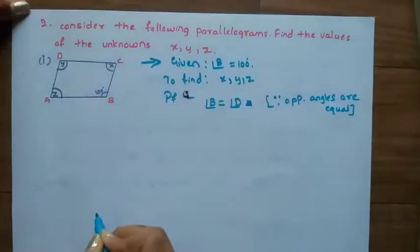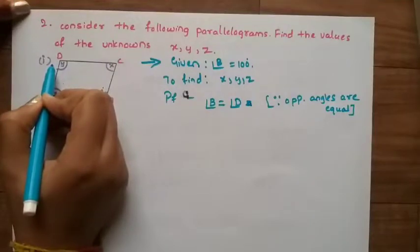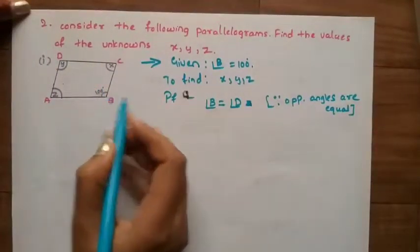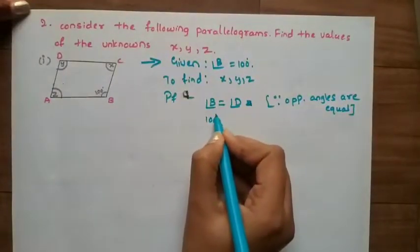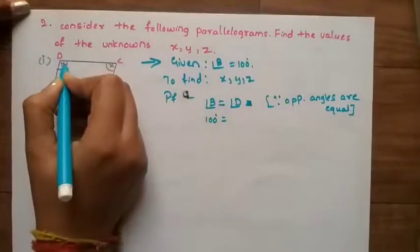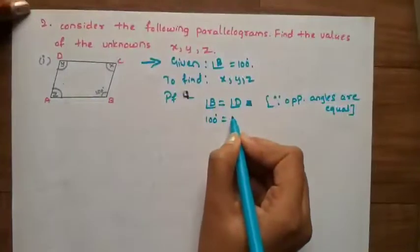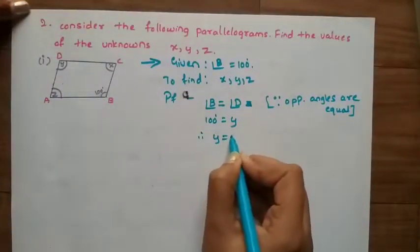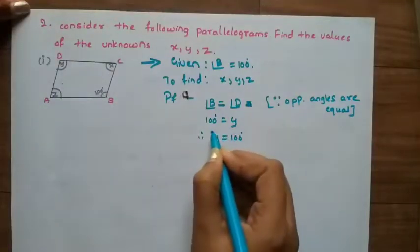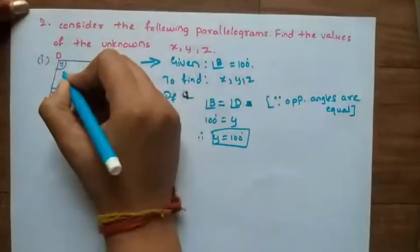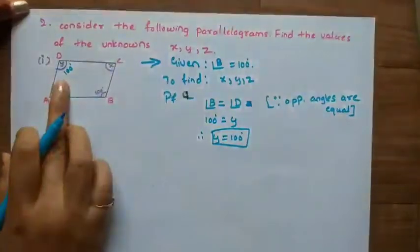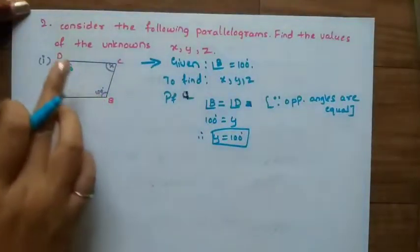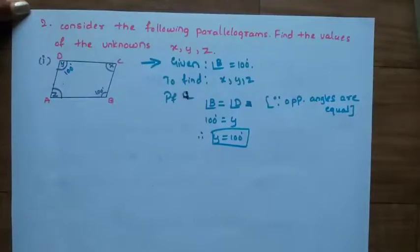Angle B is equal to angle D because opposite angles are equal — this is a property of the parallelogram. Angle B is 100 degrees, and angle D is given as Y. So Y is equal to 100 degrees.